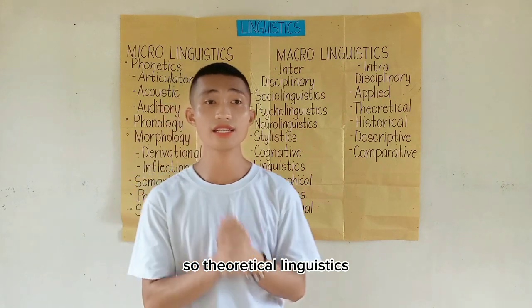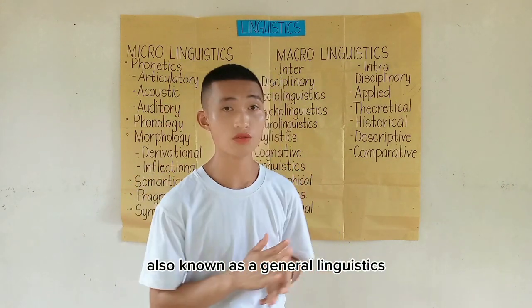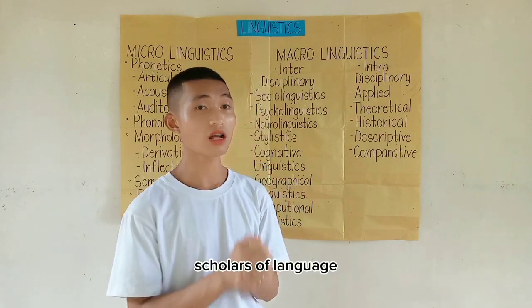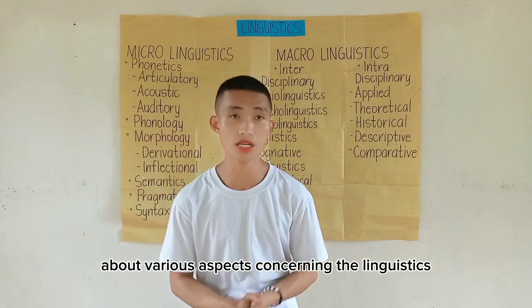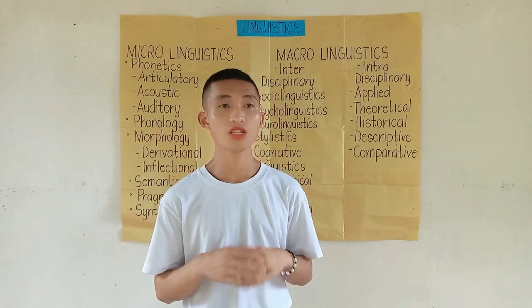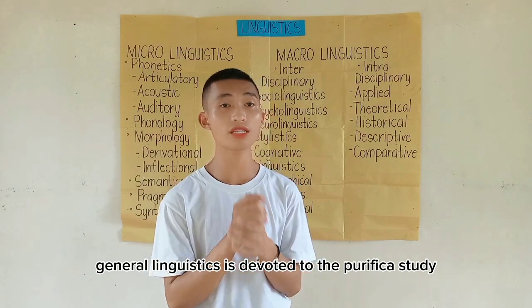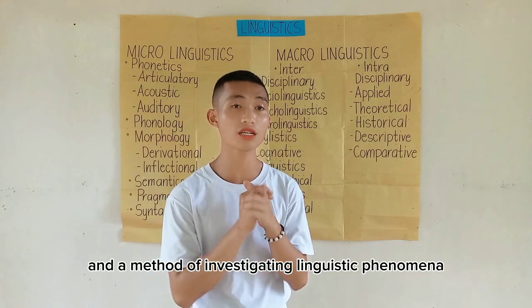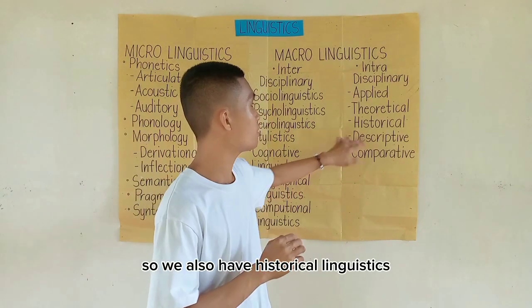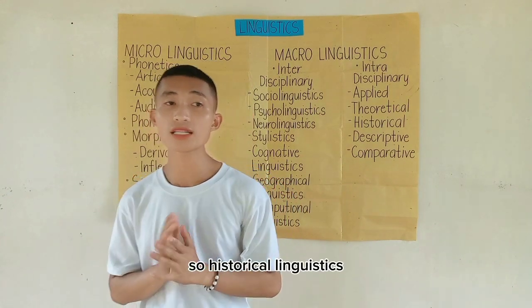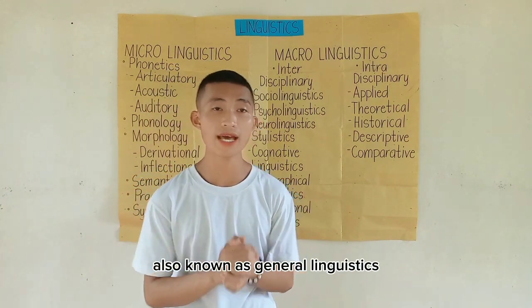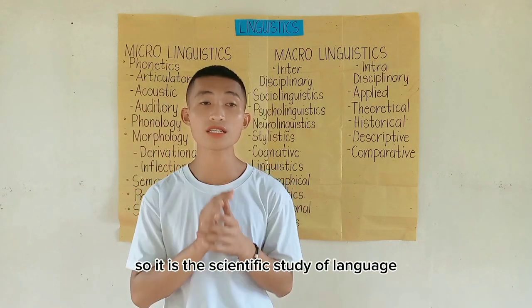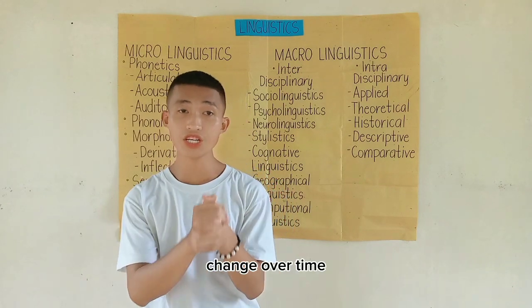The second is theoretical linguistics, also known as general linguistics, which deals with concrete theories presented by scholars about various aspects of linguistics. It is devoted to the theoretical study and description of language and methods of investigating linguistic phenomena. We also have historical linguistics, also called diachronic linguistics, which is the scientific study of language change over time.